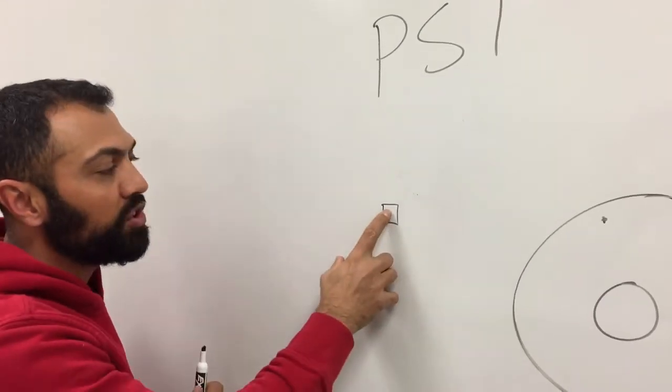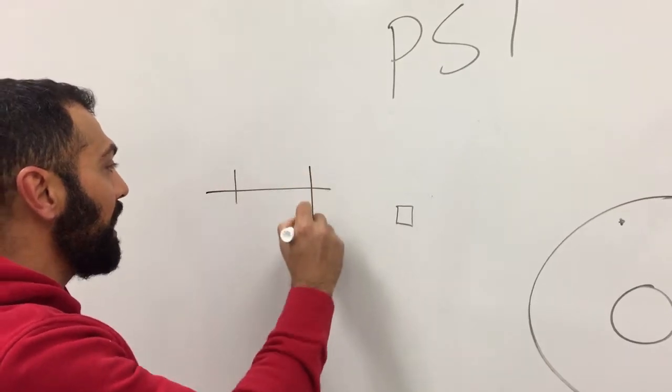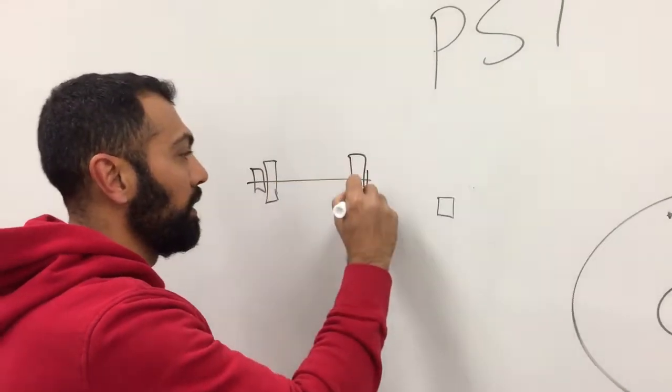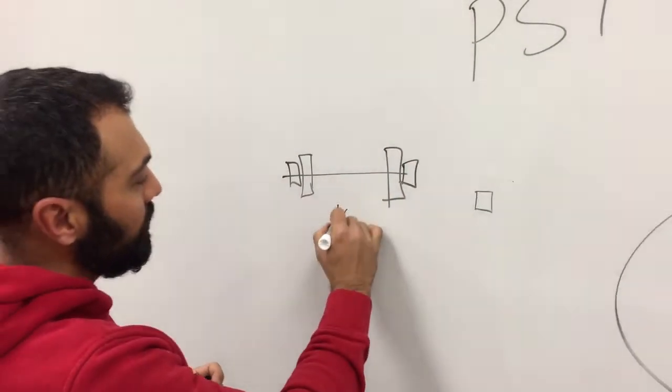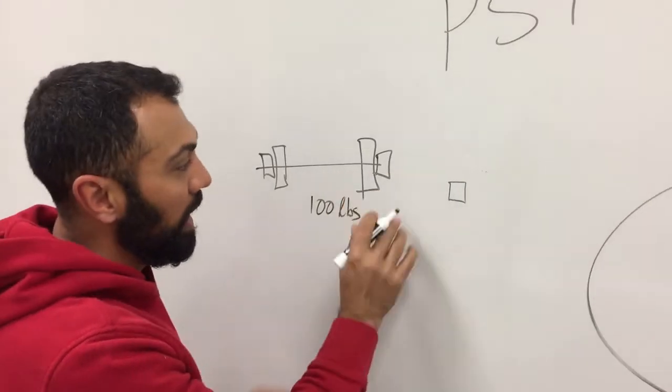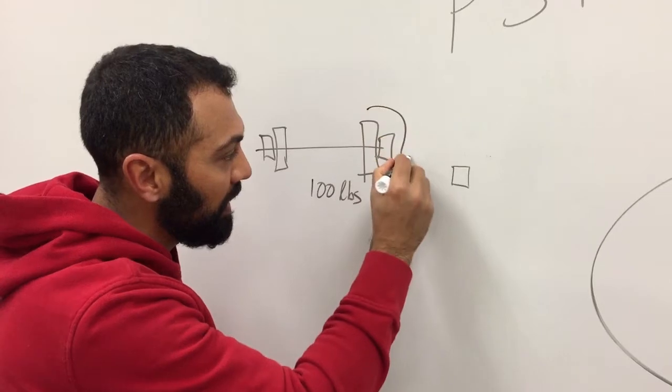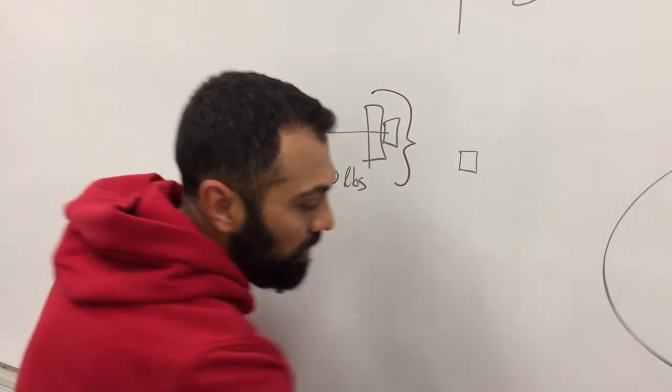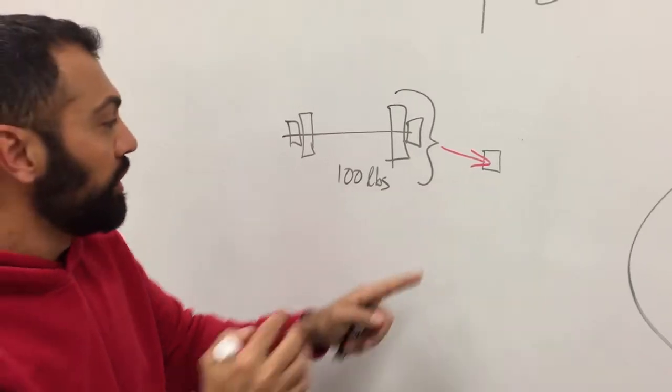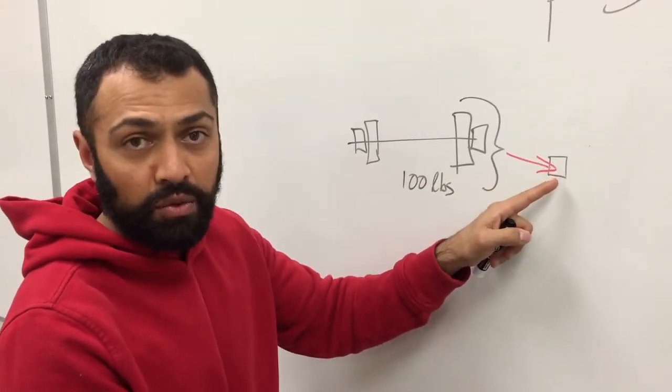Now on that one square inch we will have a certain amount of pounds. Here's some weights. Now if this is a hundred pounds, and if we want to talk about a hundred PSI, a hundred PSI is basically this force pushing on that one square inch. So here a hundred PSI means a hundred pounds pushing on that square inch.